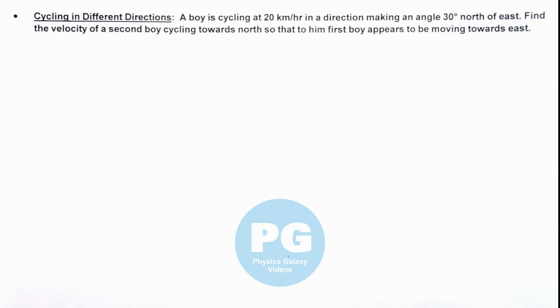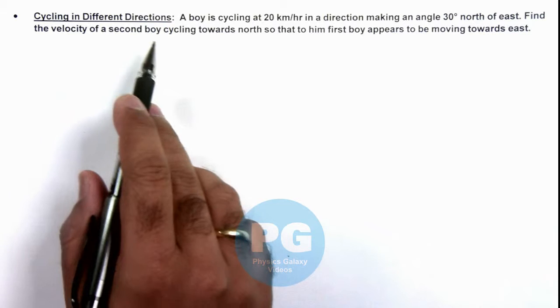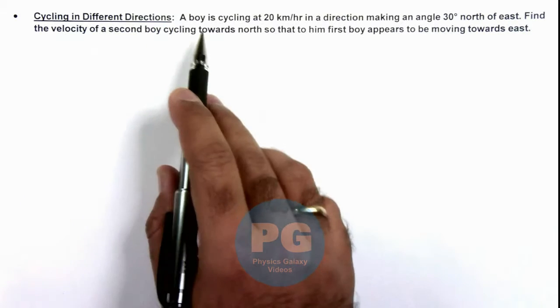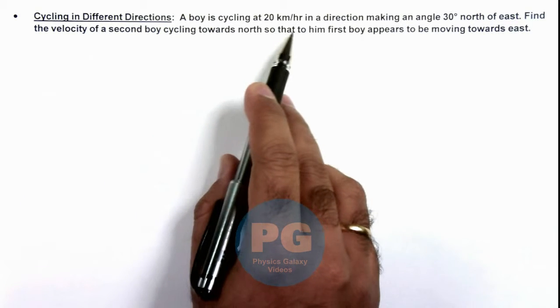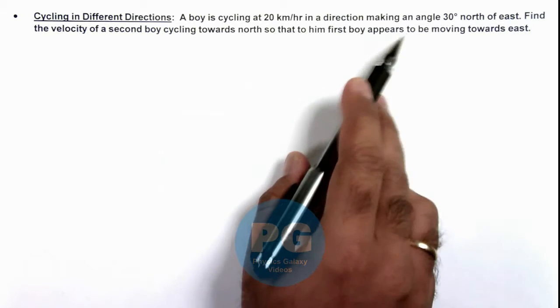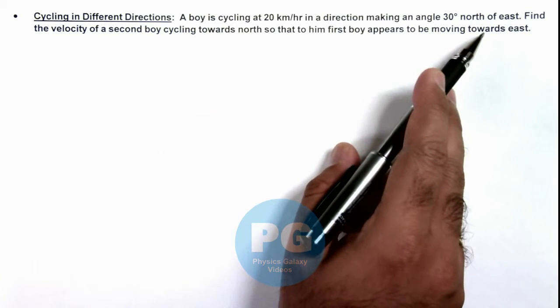This illustration is about cycling in different directions. We are given that a boy is cycling at 20 kilometers per hour in a direction making an angle 30 degrees north of east.